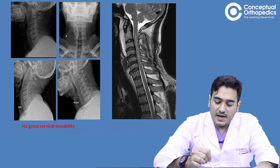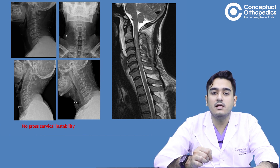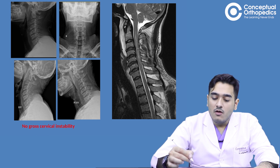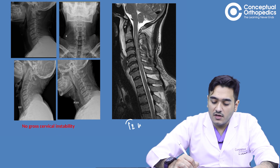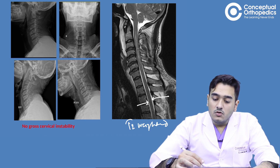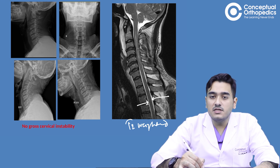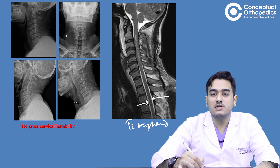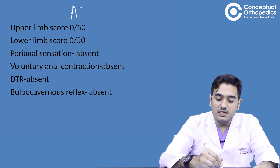Even the dynamic X-rays are not suggestive of any gross cervical instability or fractures. On the MRI — this is the T2-weighted image — we can see the hyperintense CSF column, and we observe some amount of cord edema present in the cervical spine, which may be secondary to the injury the patient sustained.